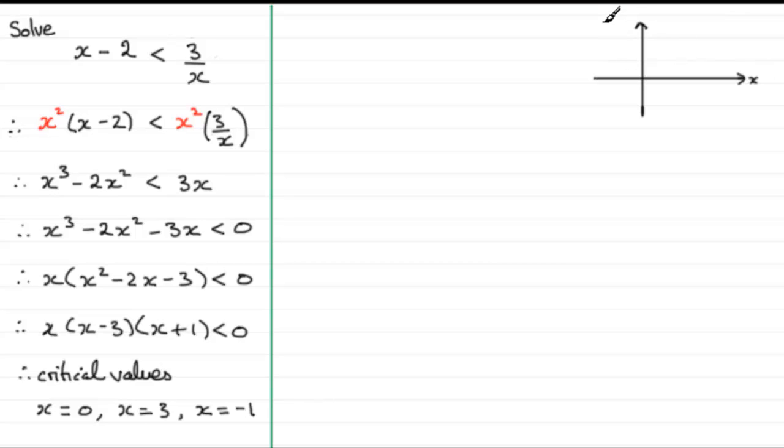And we've got our critical values at minus 1, 0 and at 3. Now it's a positive x cubed graph, it cuts the x axis then at 0, 3 and minus 1. So for a positive x cubed graph it's going to come up like this through the minus 1, over the top there, through 0, down and then up through the 3. So it's going to look something like that.